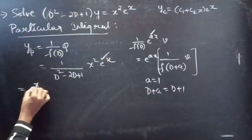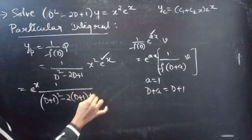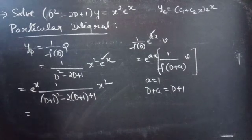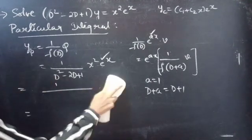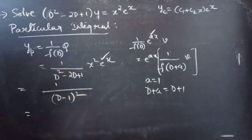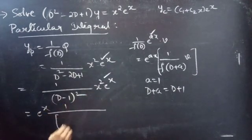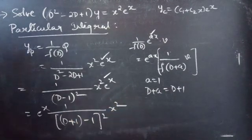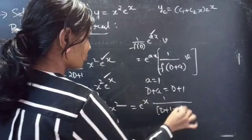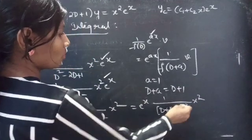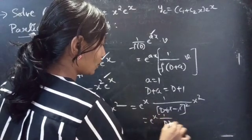Now let us shift eˣ towards the left. We get eˣ · (1/((d+1)² − 2(d+1) + 1)) · x². Instead of expanding, we note that d² − 2d + 1 = (d − 1)², so replacing d with d + 1 gives (d + 1 − 1)² = d². This becomes eˣ · (1/d²) · x².